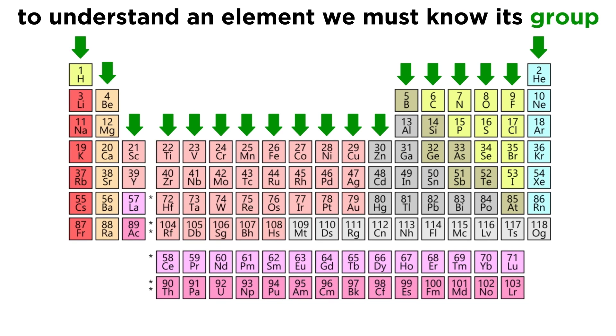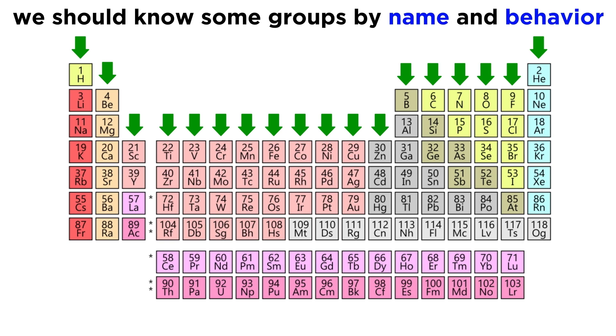The key to understanding the periodicity of the elements is identifying what group each element belongs to. As we mentioned, it is the group that an element belongs to that determines so many of its physical and chemical characteristics, which is the basis for the organization of the periodic table in the first place. Apart from categorizing elements as being either metals, metalloids, or nonmetals, we should also be able to name several of the groups, and know a bit about the behavior they imply.